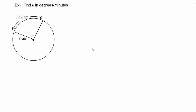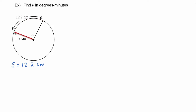We're going to put that equation to work right away in this first example, where we're being asked to find theta in degrees and minutes given this diagram. First, take stock of what you have: this distance is 12.2 centimeters, which is the arc length, so S equals 12.2 cm. This distance is 8 centimeters, which is the radius, so R equals 8 cm. The problem asks us to find theta.